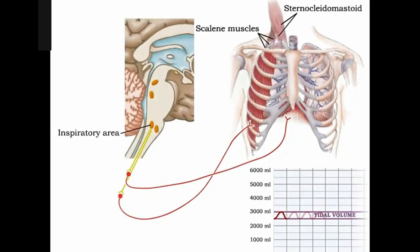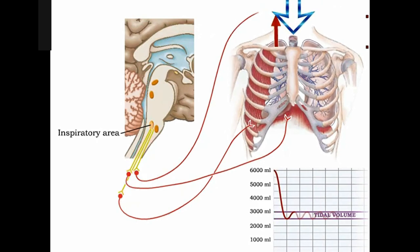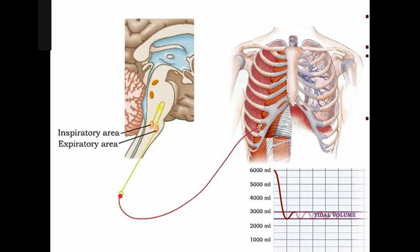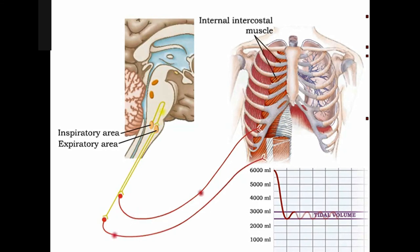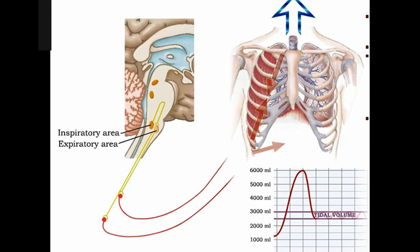In forced breathing, the inspiratory area sends impulses to accessory inspiratory muscles, resulting in a more forceful inspiration. The inspiratory area also activates the expiratory area during the expiration portion of the cycle. The expiratory area then sends impulses to expiration muscles, which consist of internal intercostals and abdominal muscles. These impulses cause the expiration muscles to contract, resulting in a forceful expiration.